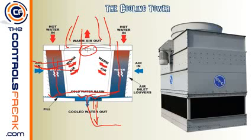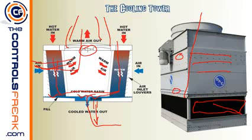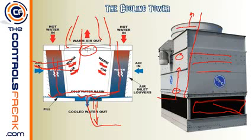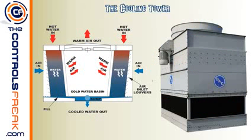That completes the cycle: hot water comes in at the top, gets cooled down, and is sucked back toward the central plant to help cool the condenser side. Looking at the picture on the right, we can see what the cooling tower looks like on the outside. The louvers are located low on the sides to allow air to be sucked in at the bottom and shot out the top, with the fan at the top and the basin at the bottom.